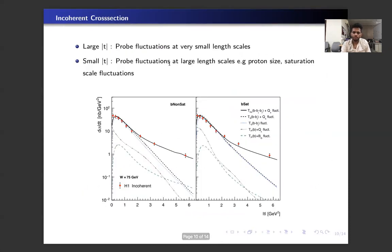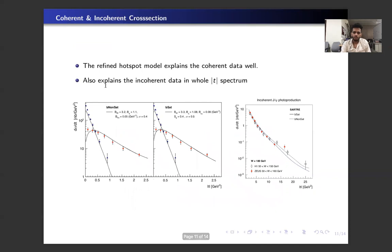So these are the predictions of our refined hotspot model for the incoherent data, and we see that both the b-nonsat and b-sat model agree with the HERA data very well. We have checked that our model reproduces the coherent data very well. Moreover, we see that our model explains the incoherent data in the whole t-spectrum at large momentum transfers.